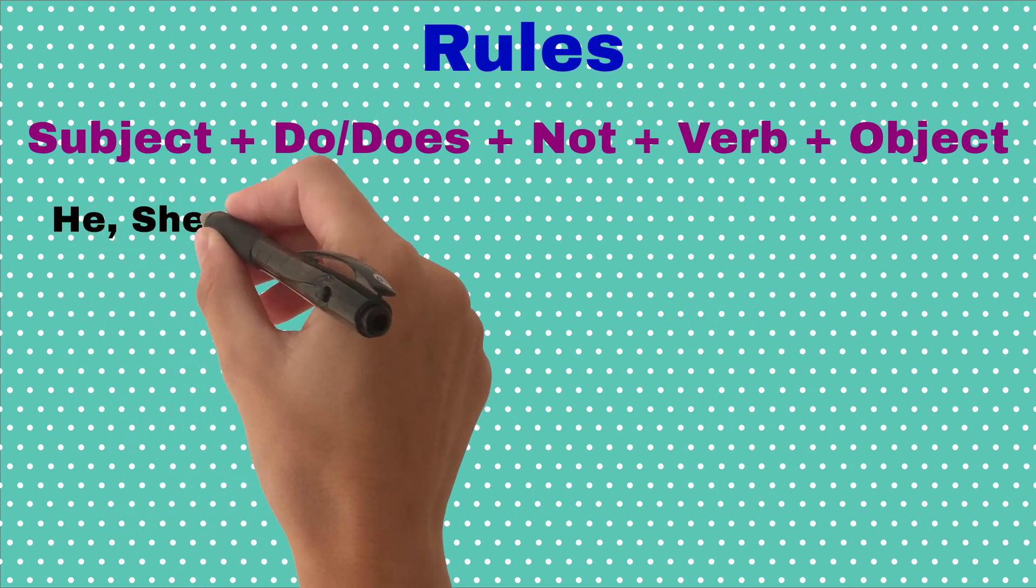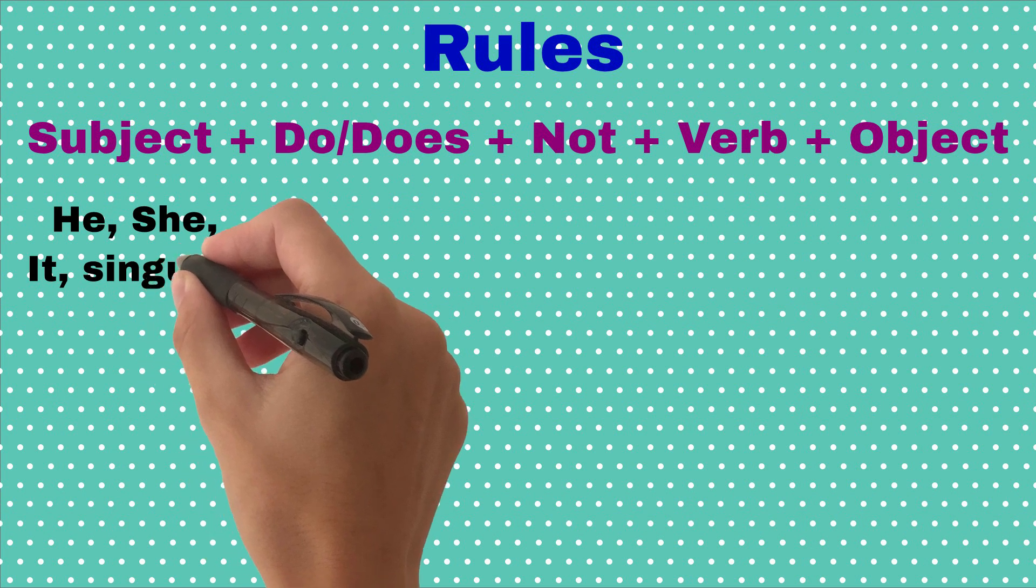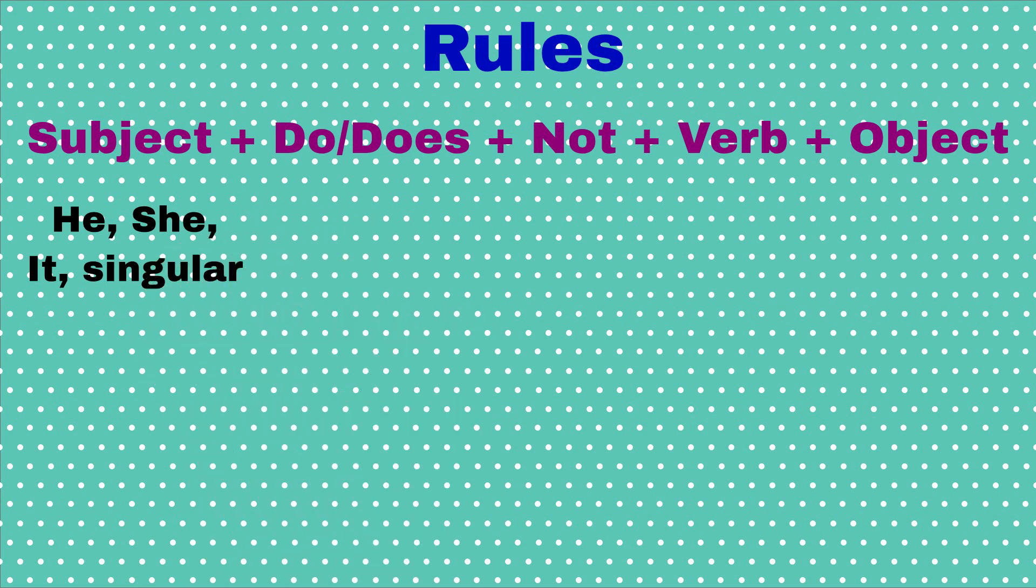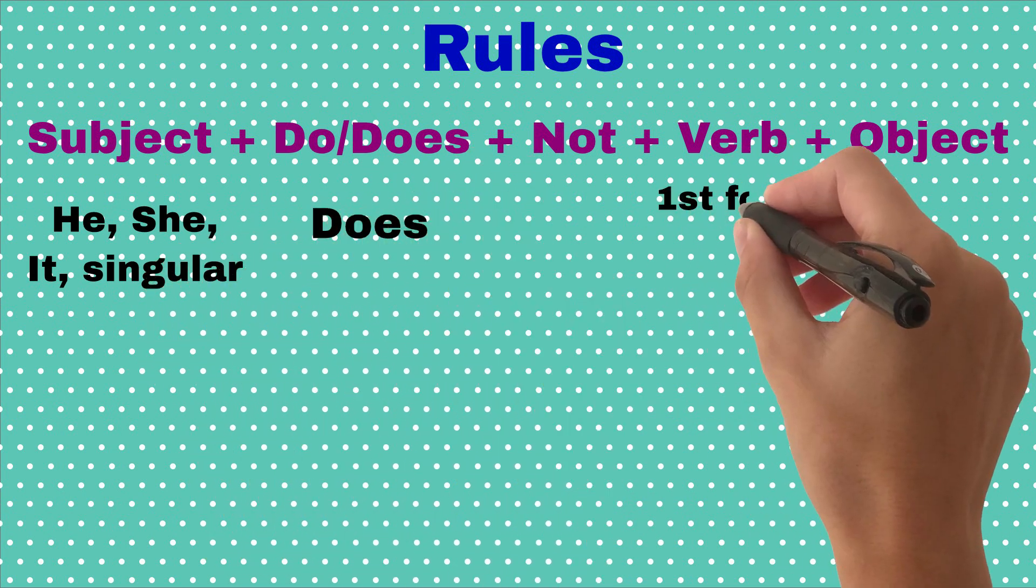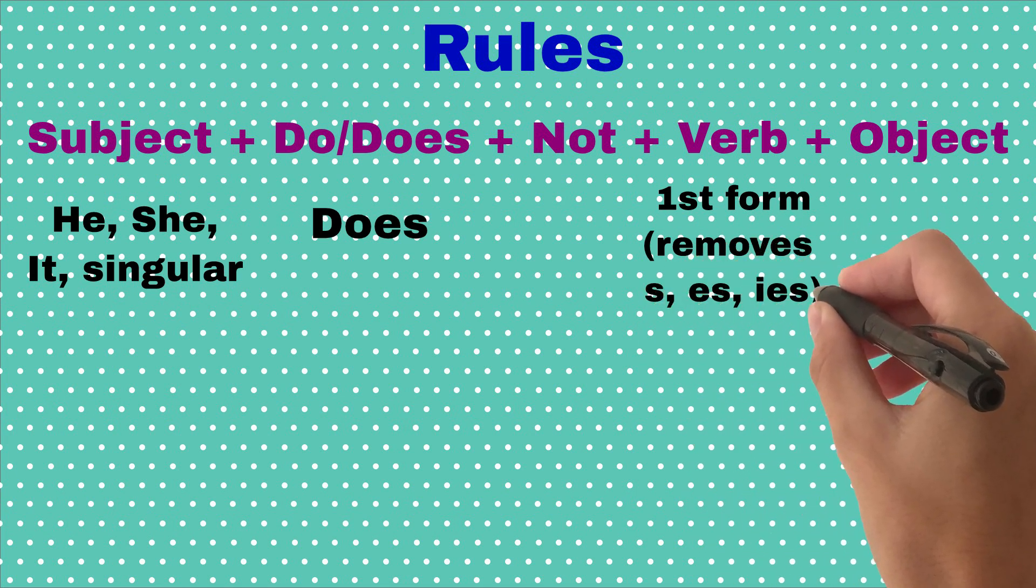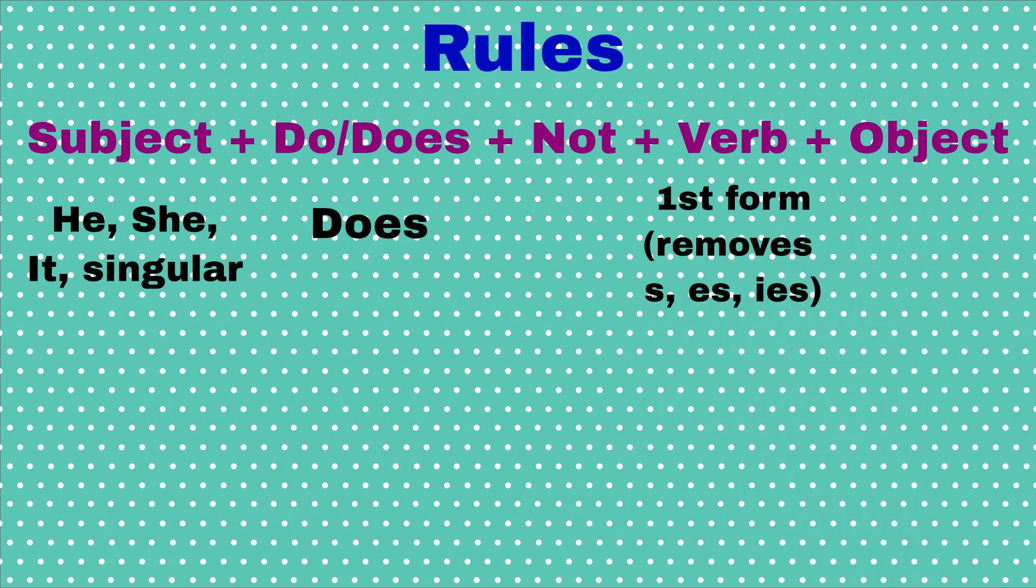If the subject is he, she, it, or any singular, we always use does with first form of verb. We don't use s, es, or ies with the verb, as we did in affirmative sentences.